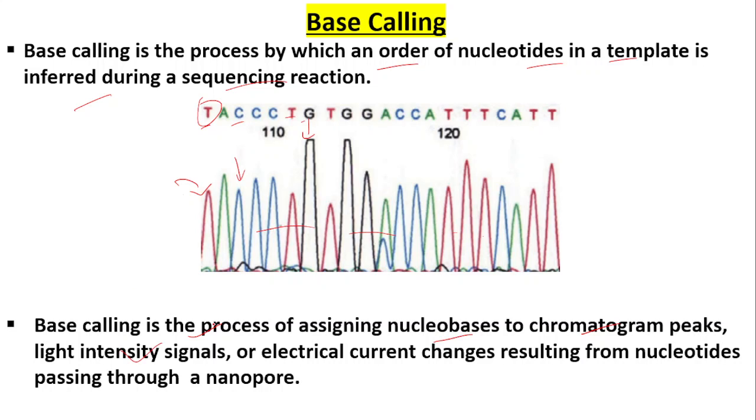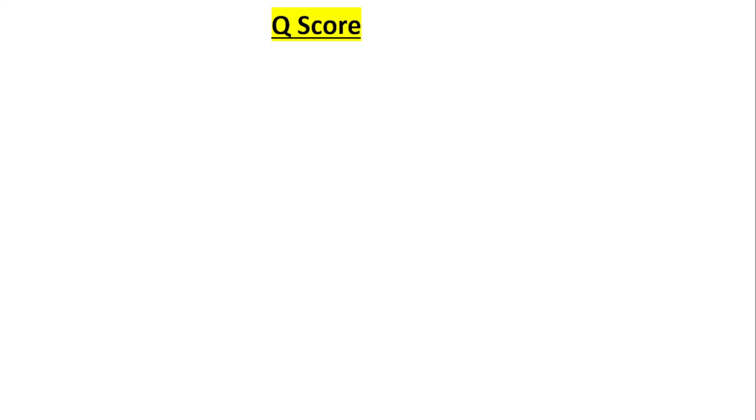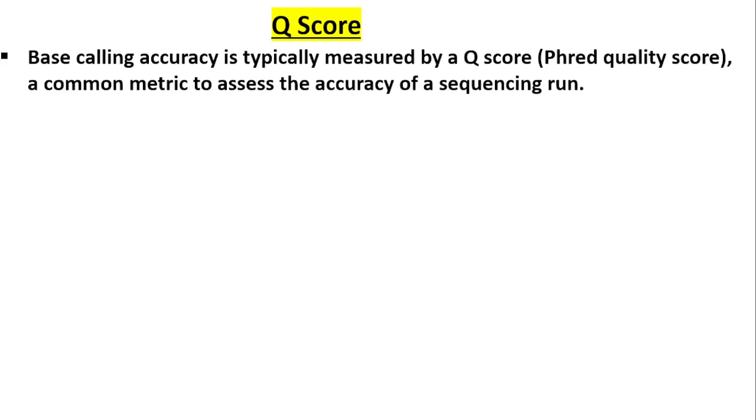These signals result from nucleotides passing through a nanopore in the case of Oxford Nanopore sequencing. So then what is Q score? Base calling accuracy is typically measured by a Q score, that is called Phred quality score.